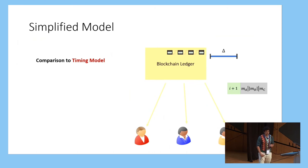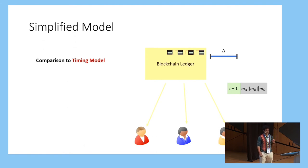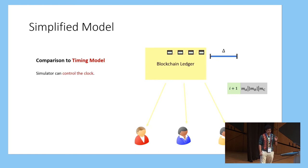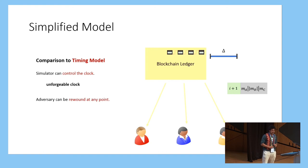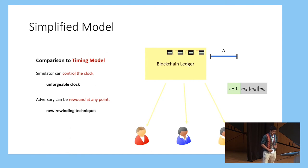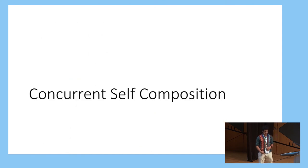There are some superficial similarities to the timing model where parties have a synchronized clock and delays make protocols work. But there are differences: in the timing model the simulator can control the clock, whereas here there is an unforgeable clock from the blockchain. In the timing model the adversary can be rewound at any point, but here we have this notion of safe and unsafe slots, requiring new rewinding techniques. Moving on to concurrent self-composition.